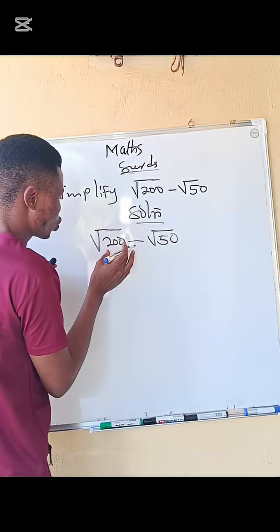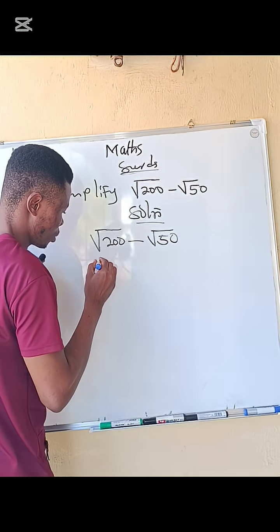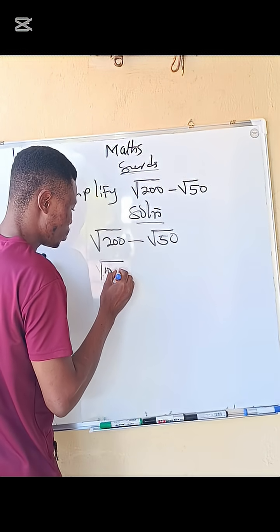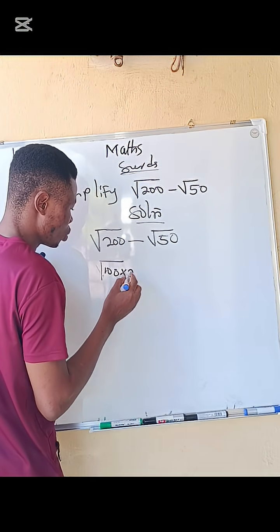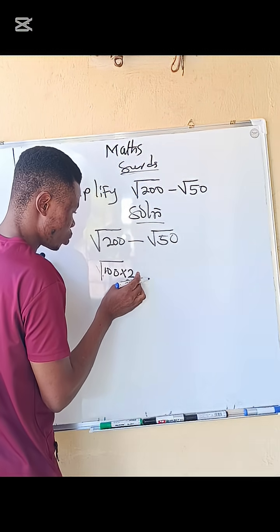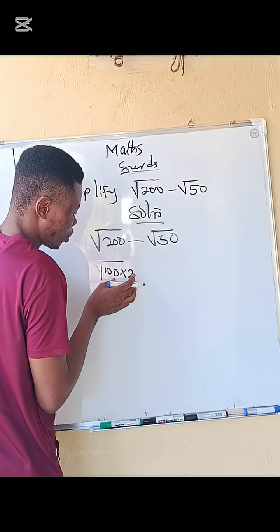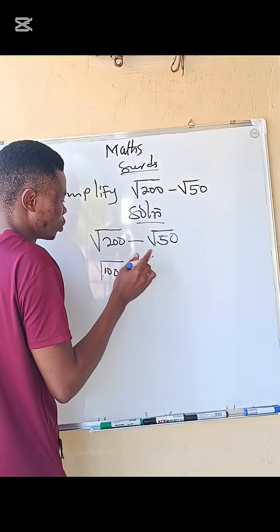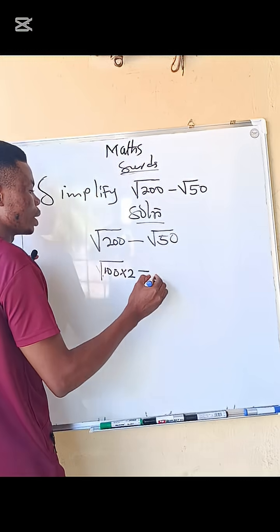I say 100 multiplied by 2. 100 is the perfect square, 2 is not. So when you multiply these two together, you are going to have 200.